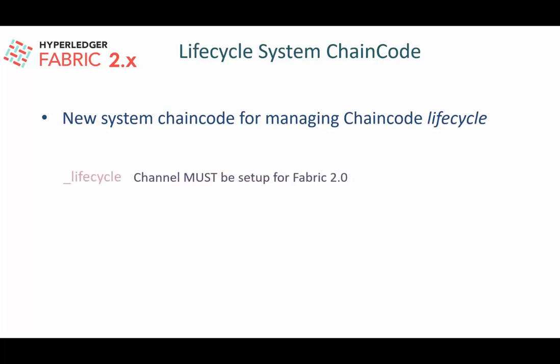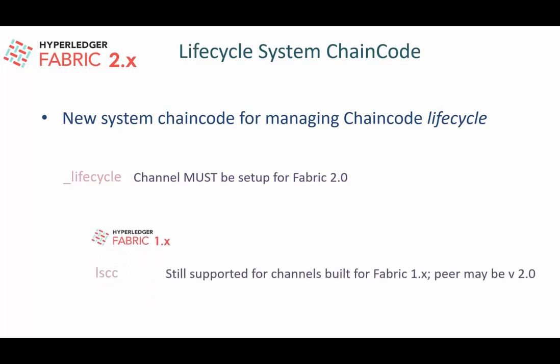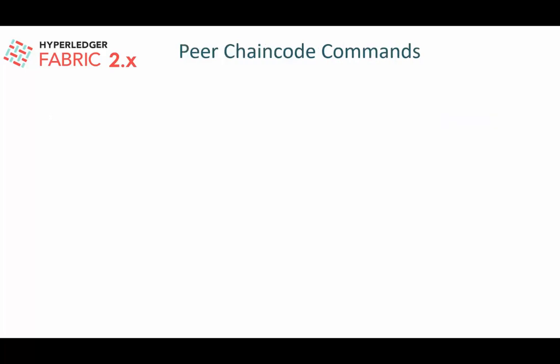To support the decentralized chaincode governance model, Fabric 2.x has introduced a new system chaincode named _lifecycle. To take advantage of this, you must set up Fabric channels with Fabric 2.0. If you've worked on Fabric 1.x, you'll know about the system chaincode LSCC (Lifecycle System Chaincode), which is still supported for channels built for Fabric 1.x — even if your peer is version 2.0. However, the recommendation is to use channels with Fabric version 2.0 to take advantage of the new lifecycle system chaincode.